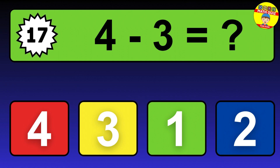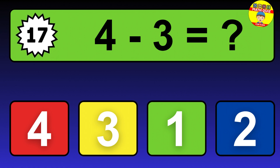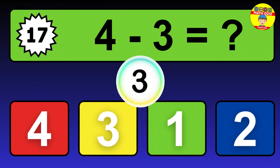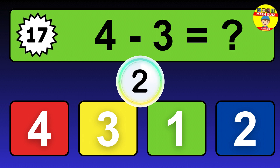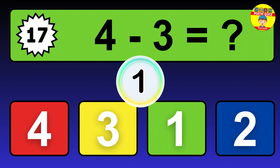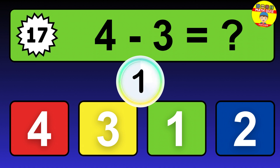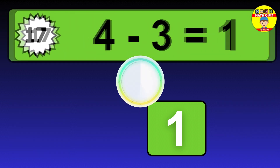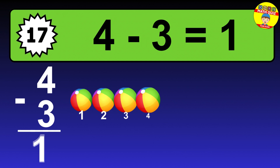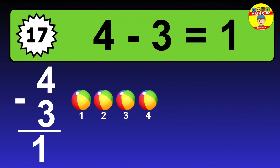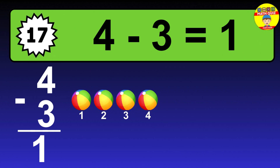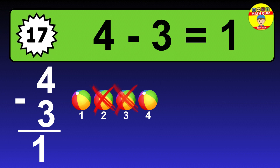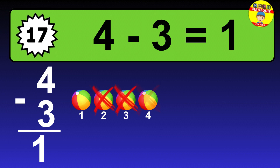Question 17. 4 minus 3 equals what? The answer is 4 minus 3 is 1. Let's count it: 1.